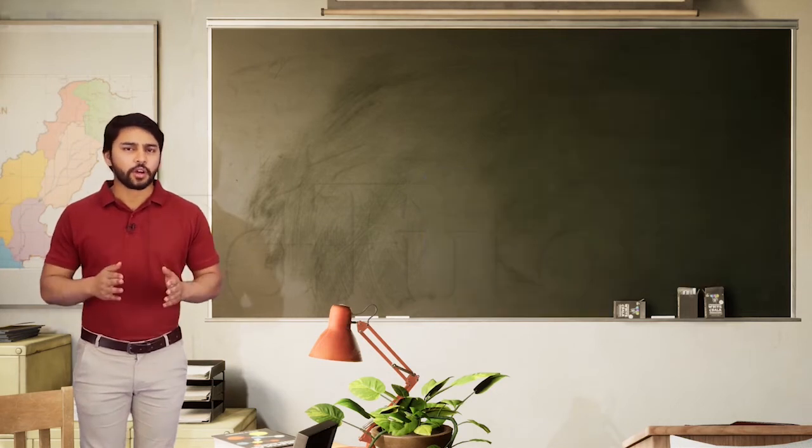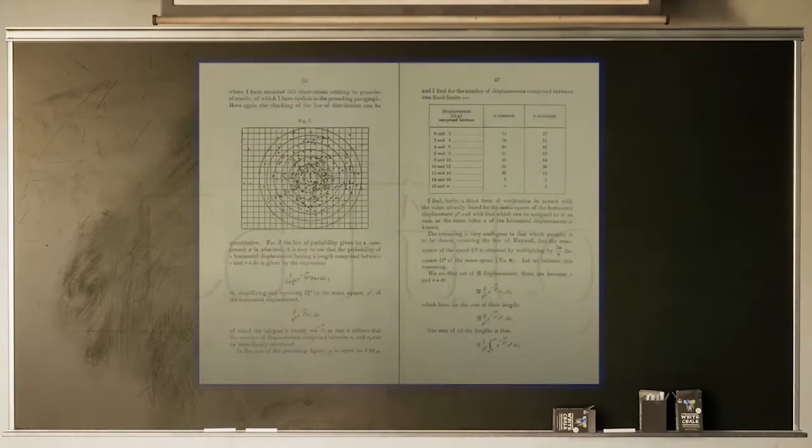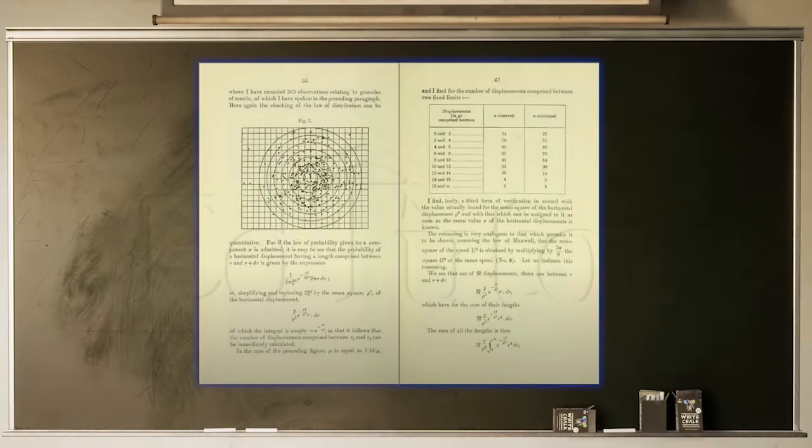Now, if we talk about the mass of an atom, it ranges from 10 raised to the power minus 27 to 10 raised to the power minus 25 kg. Indeed, it is a very small number and it is expressed as atomic mass unit, amu, where 1 amu is equal to 1.661 into 10 raised to the power minus 27 kg. Looking at this value, once again, you can have an idea how tiny an atom actually is.